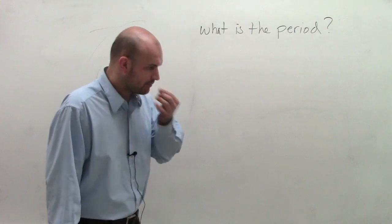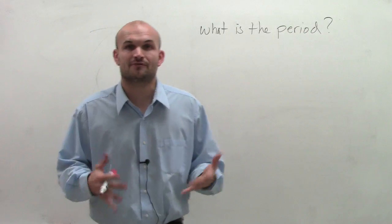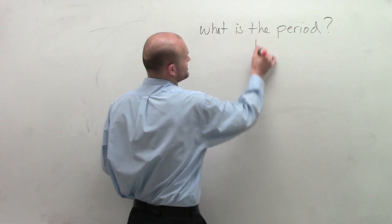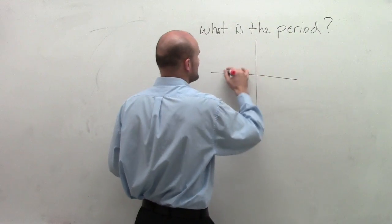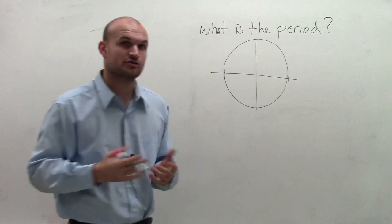When looking at the period, remember how we found the sine and cosine graph is we evaluated for our sine and cosine by utilizing the unit circle. So what I want to do is I'm going to use the unit circle to help me explain why we find or how we find the period of a trigonometric graph.